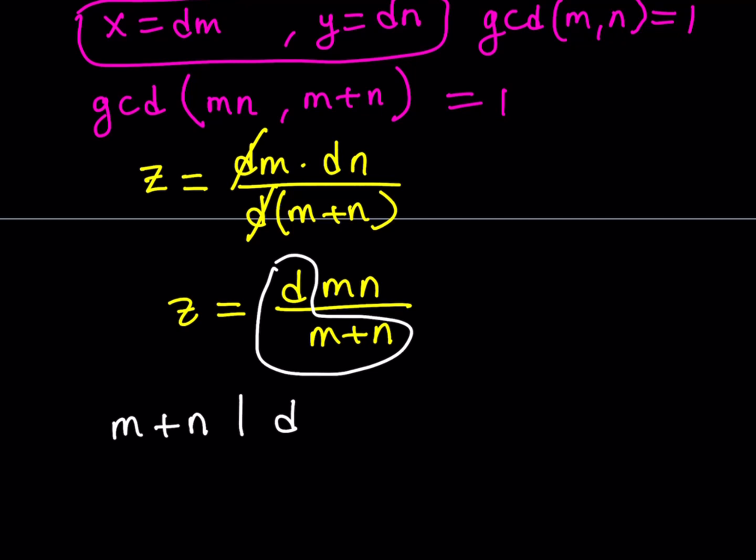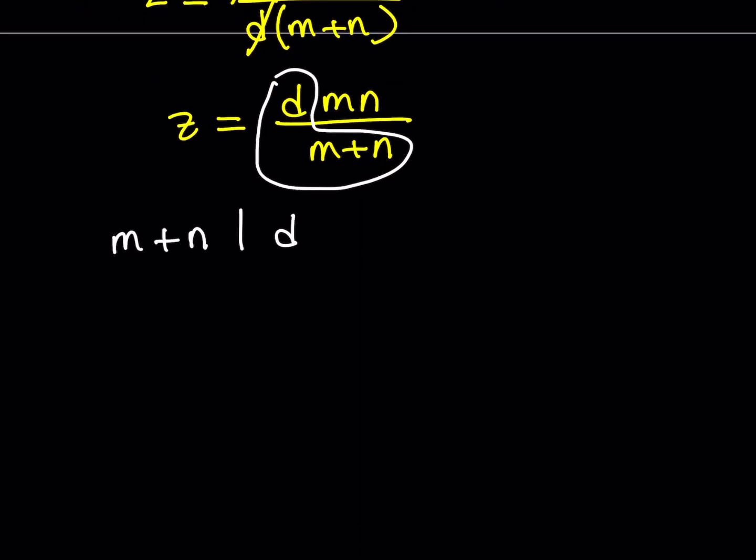What is that supposed to mean? Think about it for a minute. Well, m plus n divides d means d is a multiple of m plus n. And I can write it as d equals m plus n multiplied by a positive integer k. Now, how does this help us?